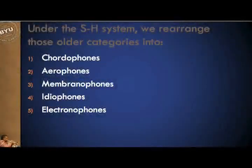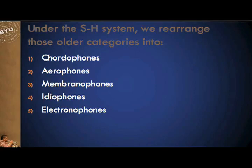Under the S-H system, we arrange these older categories into new ones: number one, chordophones; number two, aerophones; number three, membranophones; number four, idiophones; and number five, a relatively newer modern category, electronophones. We're going to look at each of those categories and see some YouTube examples of those instruments.